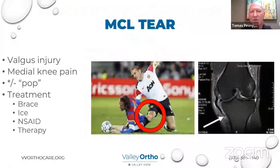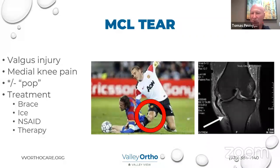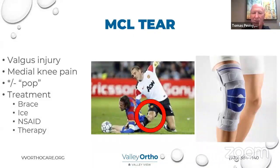Now we're going to switch gears and talk about ligament injuries. The MCL or medial collateral ligament on the inside of the knee is the most commonly injured ligament. The good news is most MCL injuries, especially in isolation, will heal on their own because it is technically outside the knee joint — not exposed to the same chemical and physical environment as the cruciate ligaments. It's typically a contact injury where the knee is forced inward, tearing the MCL. Generally, we treat it with a brace, physical therapy, ice, and anti-inflammatories. It takes about six to eight weeks to heal.